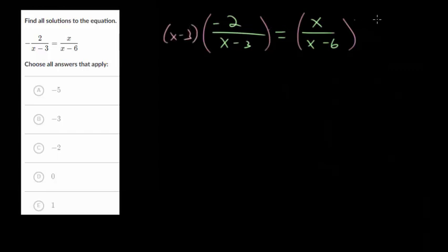If we multiply each side by x minus 3, on the left-hand side, they will cancel each other out, and you get negative 2. On the right-hand side, you'll still have this x minus 6. So we could also multiply everything by x minus 6.